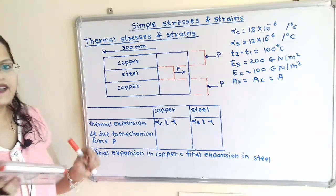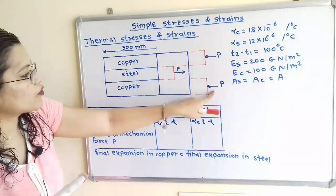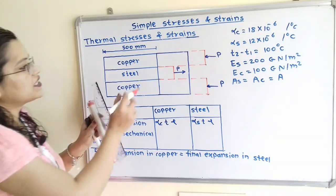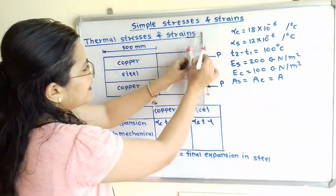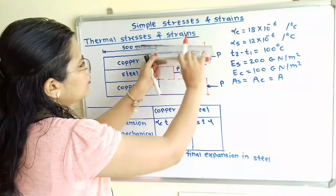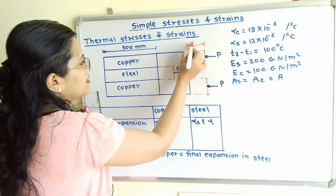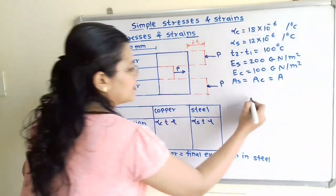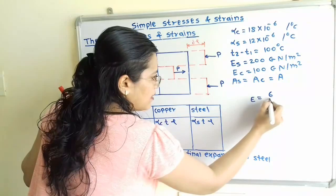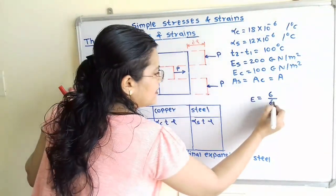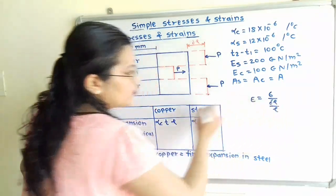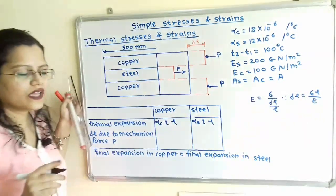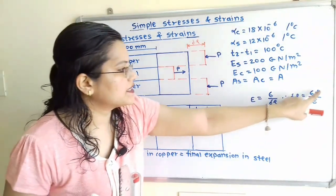Next, we write the change in length due to mechanical force P. For the copper material, using Young's modulus E = σ / (δL/L), we get δL = σL/E. So for copper, the change in length due to the compressive force is σ_C · L / E_C.